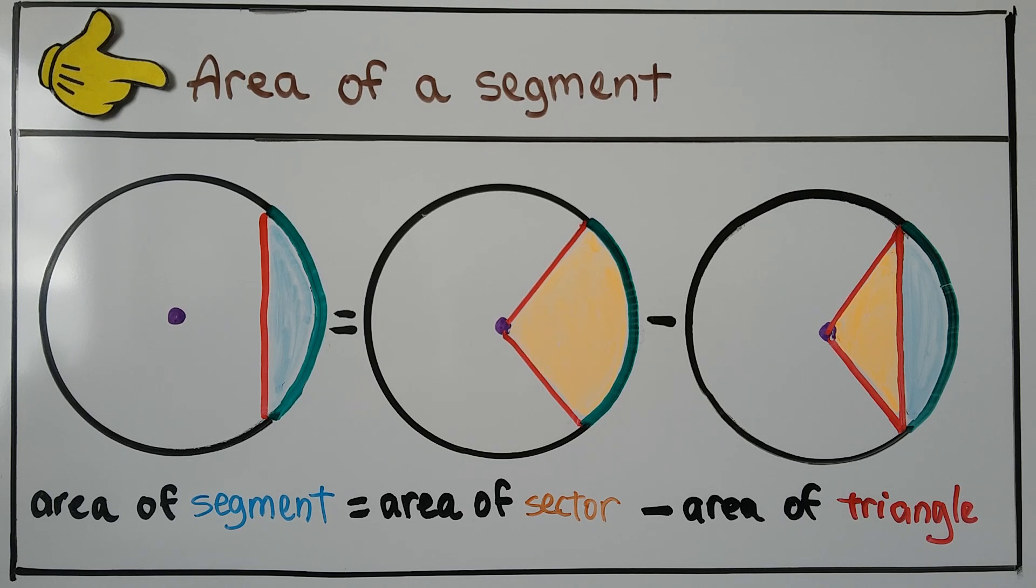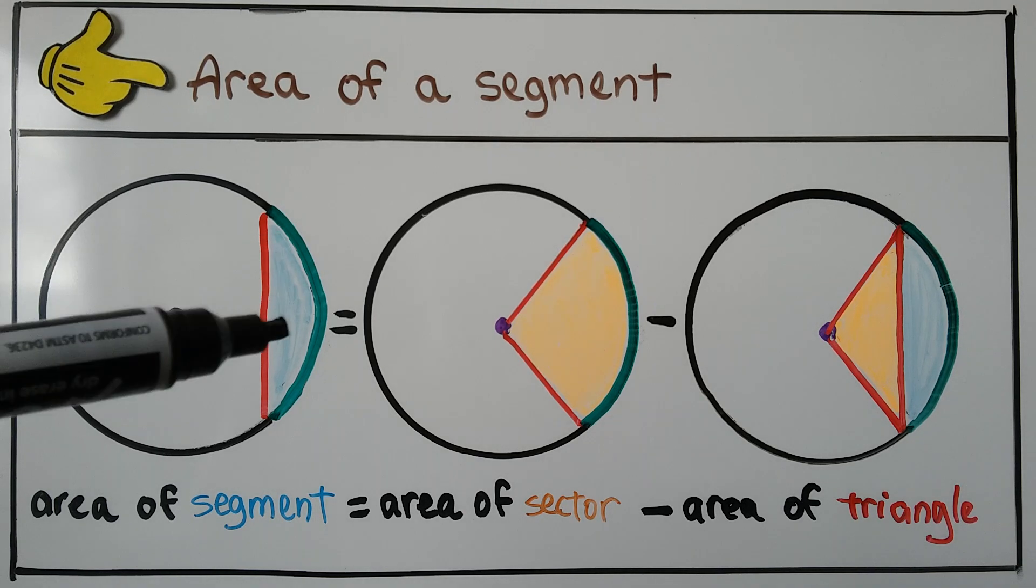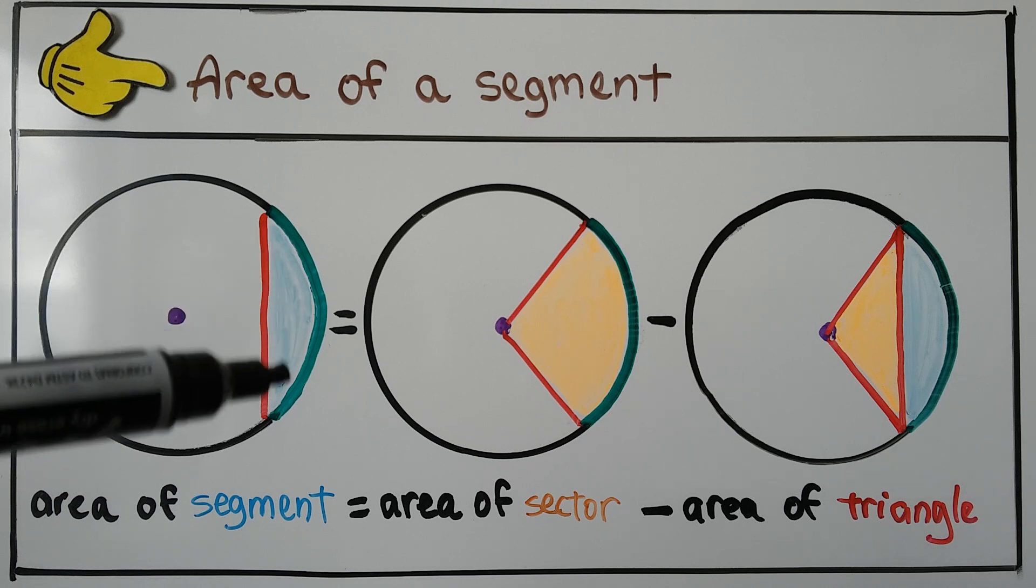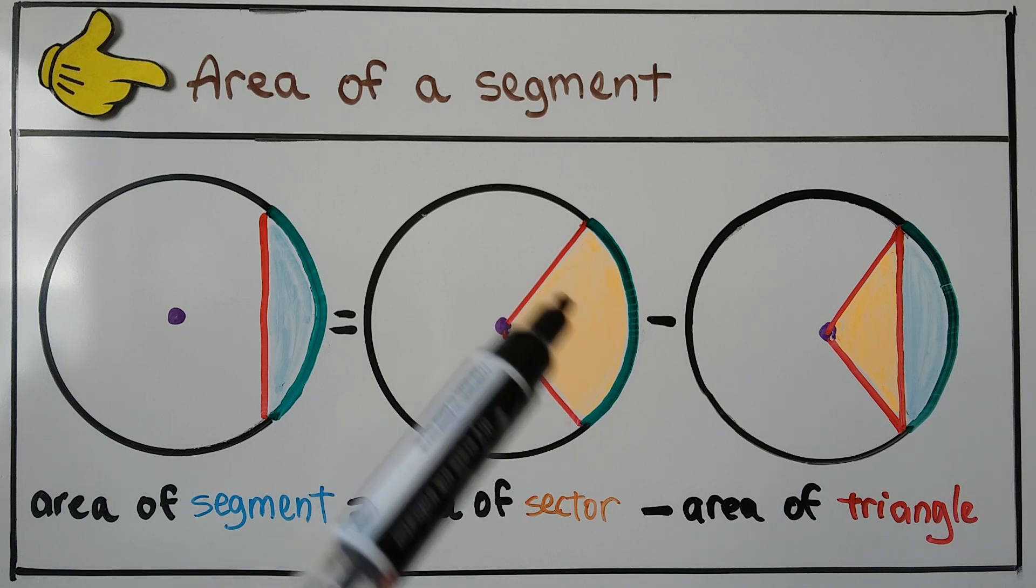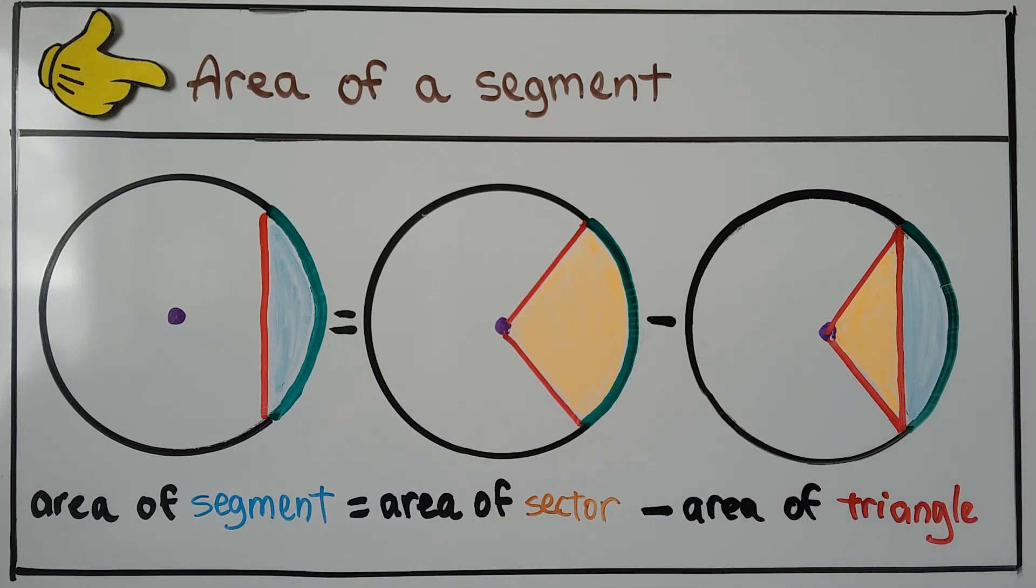So for your notes, for the area of a segment, we've got this light blue area here, which is our segment. It's going to equal the area of this sector minus the area of that triangle.